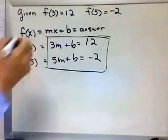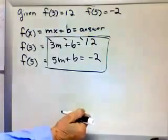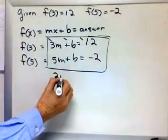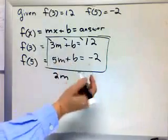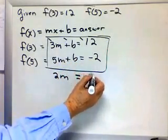And what if I subtracted the top equation from the bottom equation? 5 minus 3m, 2m, b minus b, 0, minus 2, minus 12, minus 14.